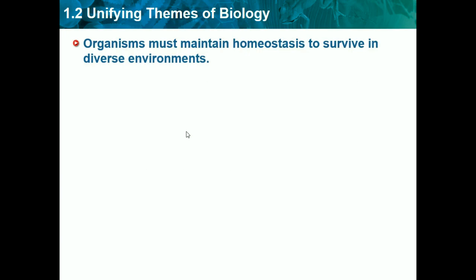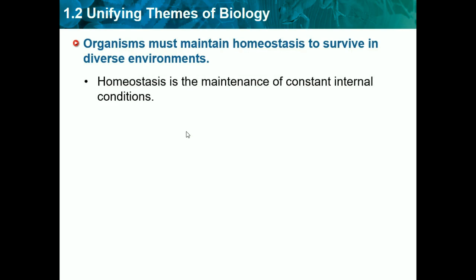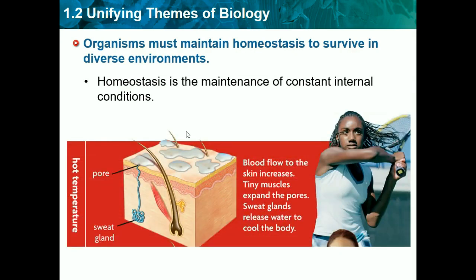Organisms must maintain homeostasis to survive in diverse environments. Homeostasis is the maintenance of constant internal conditions — hopefully you already knew this from middle school. This is an example of how someone maintains homeostasis. This girl is playing tennis, so her heart has to do extra work. Since she's playing, her internal body temperature is rising, but you need it at a stable temperature, so her body is trying to cool down her skin by sweating, which will help her maintain homeostasis.